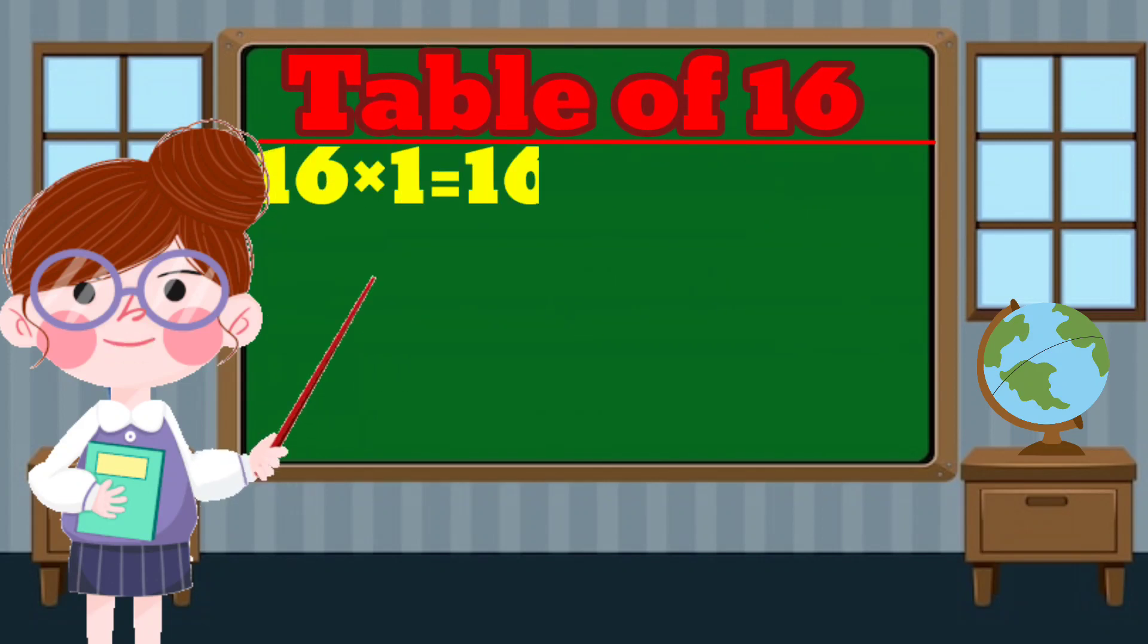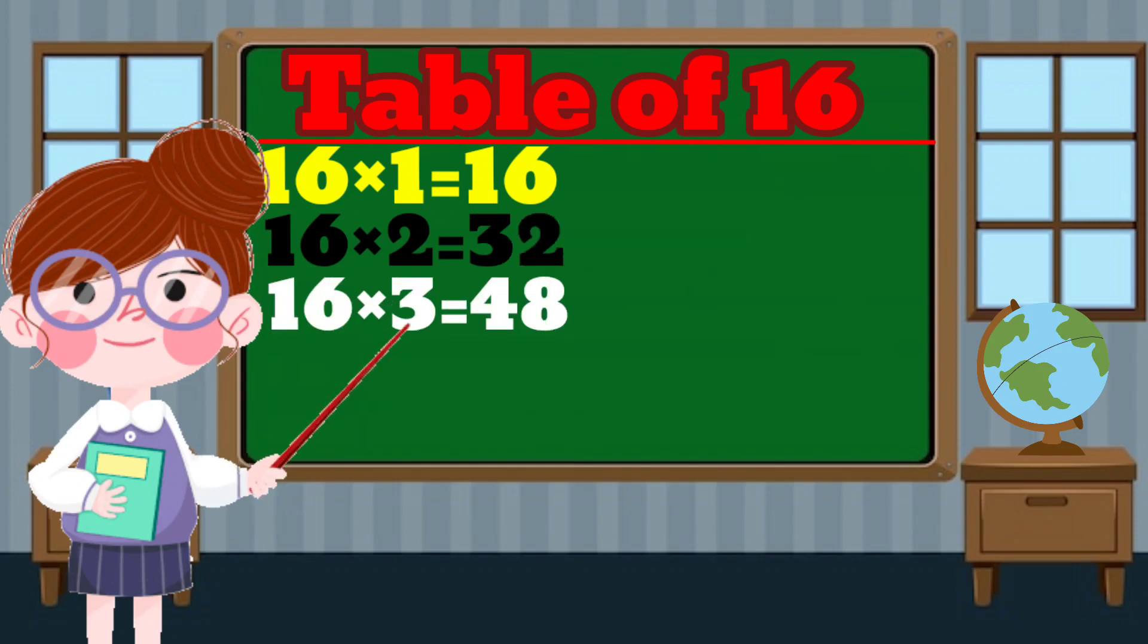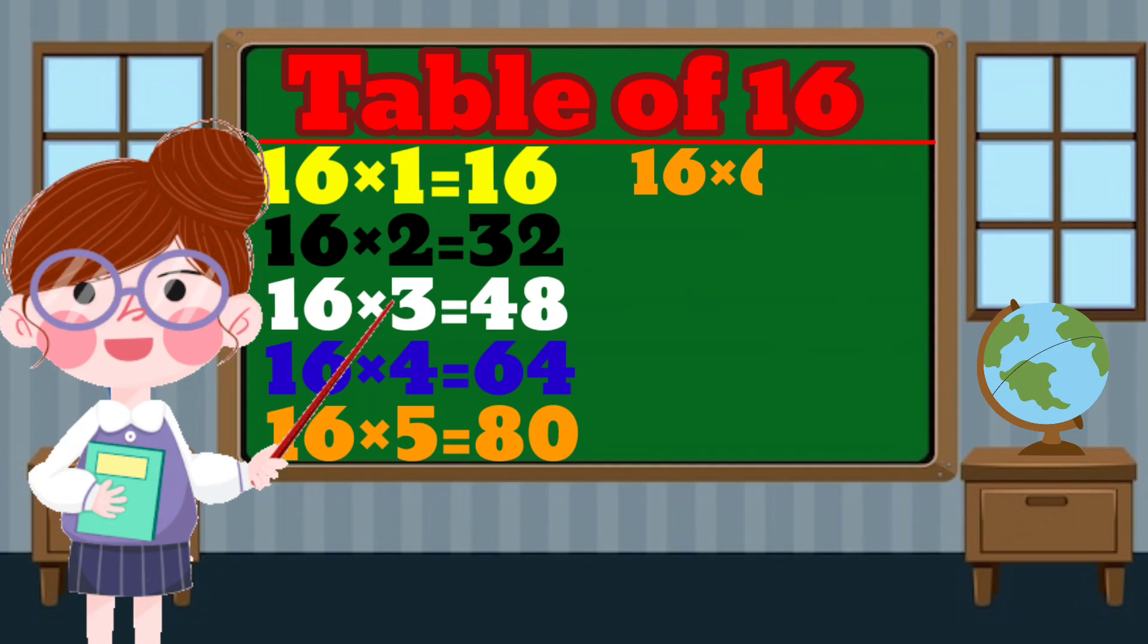16 times 1 equals 16. 16 times 2 equals 32. 16 times 3 equals 48. 16 times 4 equals 64. 16 times 5 equals 80.